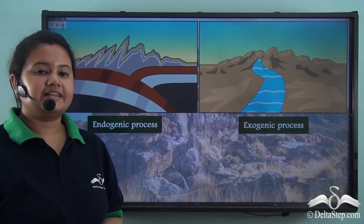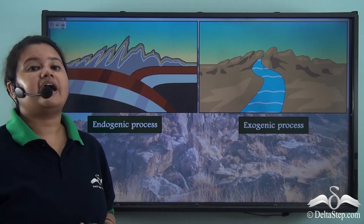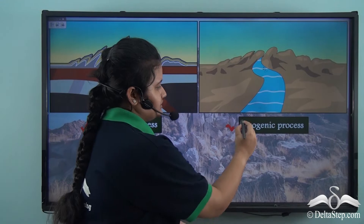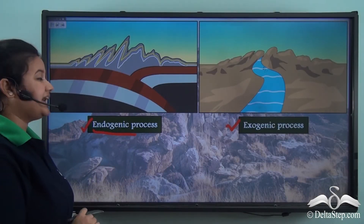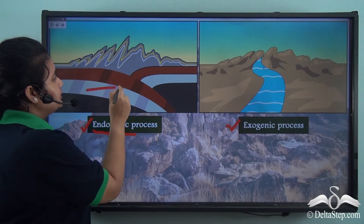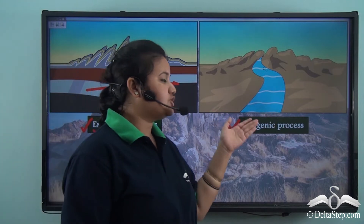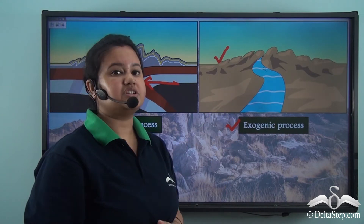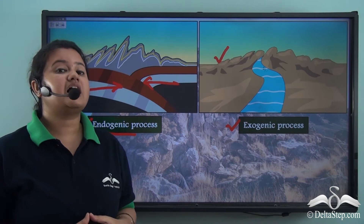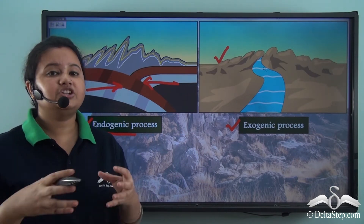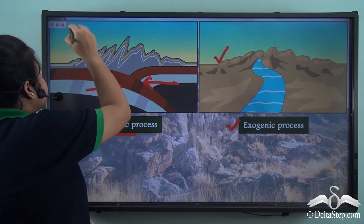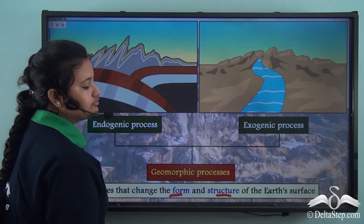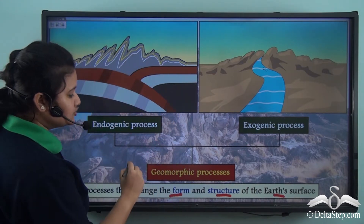So we just discussed that there are two forces that change the structure and form of the Earth's surface: endogenic forces and exogenic forces. Endogenic processes are the processes that act inside the Earth, while exogenic processes act on the Earth's surface like erosion of a mountain by a river. These two processes are not independent, but they act together and jointly change the Earth's surface.